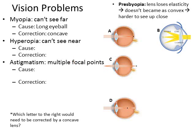Hyperopia is when you can't see close — that's farsightedness, whereas myopia is nearsightedness. The cause of hyperopia is a short eyeball, as shown in diagram C. The focus is occurring behind the retina. The correction for that is to add a convex lens, so the light has already been focused a little bit by the time it hits the eye's own lens — it focuses sooner and hits the retina properly.